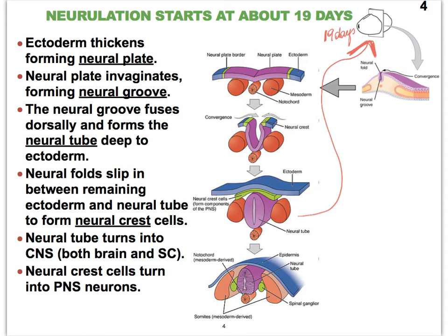Taking it one step further, we see the neural tube following the length of our embryo. The ectoderm is mostly going to become the epidermis of our skin. Notice that the neural crest cells have continued to slip deeper into the embryo and are now sitting on either side as cylinders of the neural tube. Our brains and spinal cords don't look like these long tubes — the spinal cord does, but not the brain. So still a lot needs to happen.